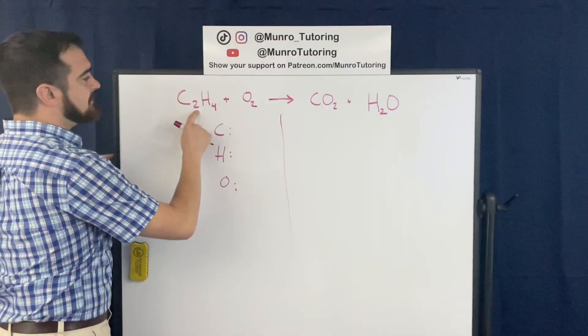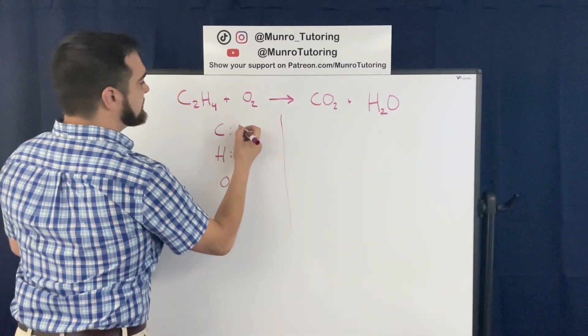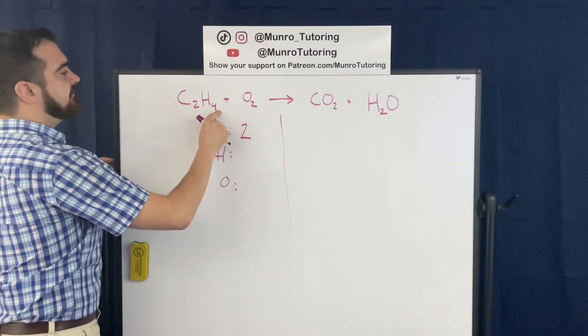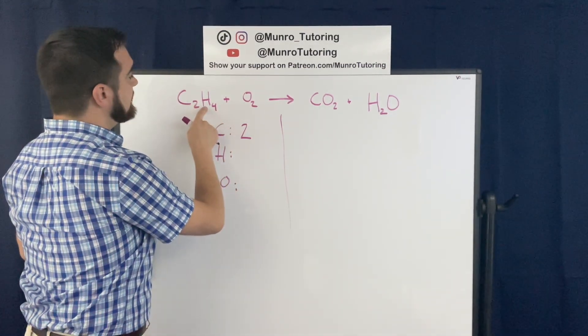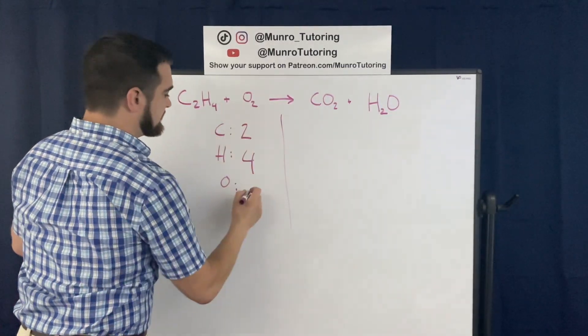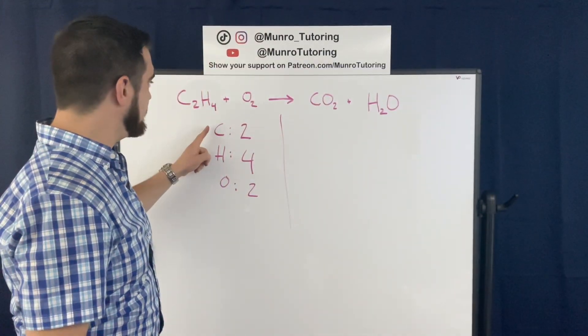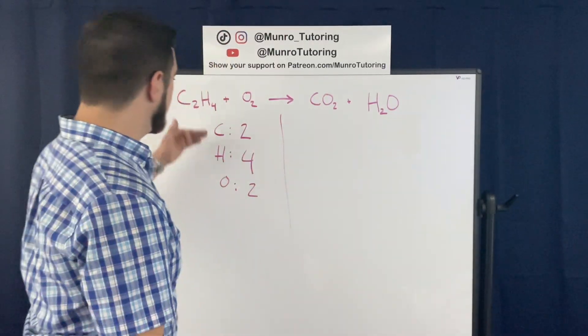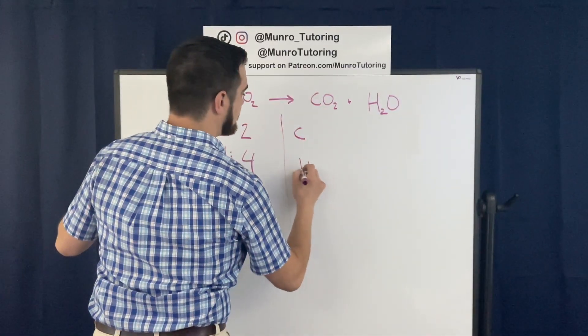And so this subscript is indicating that in this molecule there are two carbons, right? So that is our two, we have that many carbons. There are four hydrogens. So the subscript, the element that immediately precedes that is what that count is. So we have four hydrogens, and then we have two oxygens. Now, a little trick is to always write the elements in the same order that you wrote them the first time. Don't just follow this order over here. So if you wrote CHO on the right-hand side, you're going to write CHO again.